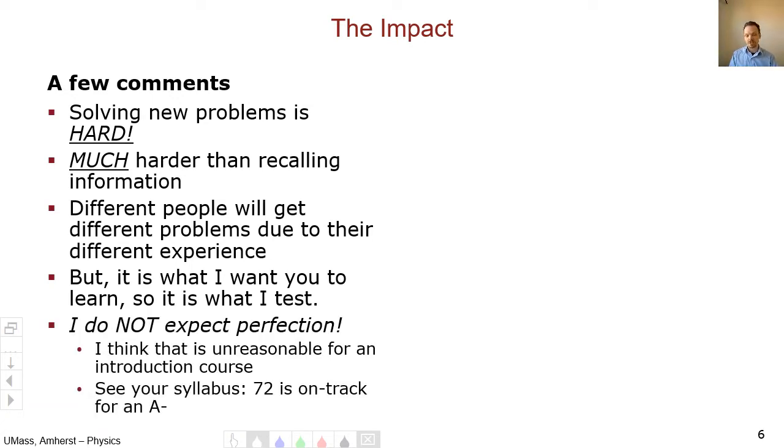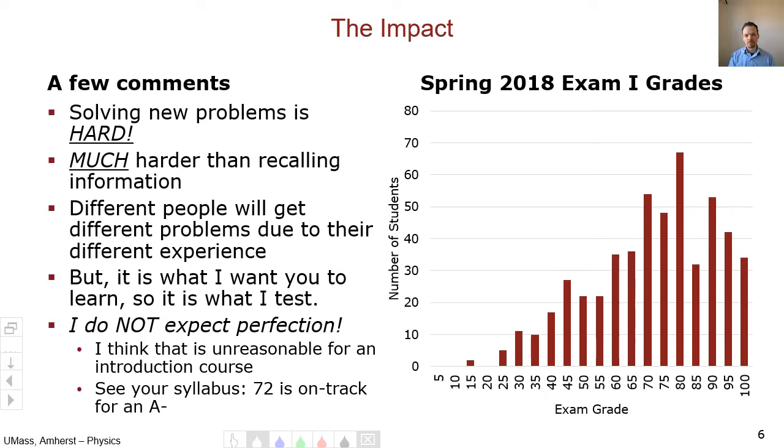But I don't expect perfection because it is hard, especially I think perfection is kind of unreasonable for an introductory course such as this one. So if you see on your syllabus, 72 on my exams is on track to be an A. This is my acknowledgement of the fact that the skill of solving new problems is hard. And so here's a distribution of the grades from spring 2018. And you can see that a good fraction of the students from last year were on track to be earning an A in the class based upon solely the first exam. So it's not impossible. The grades might be a little lower than you might be used to in some of your other courses, but that's because I'm asking you to do something that's new and different and you might not be used to. And when you're new at something, it tends to be more difficult. And I want to acknowledge that in how I grade the course.